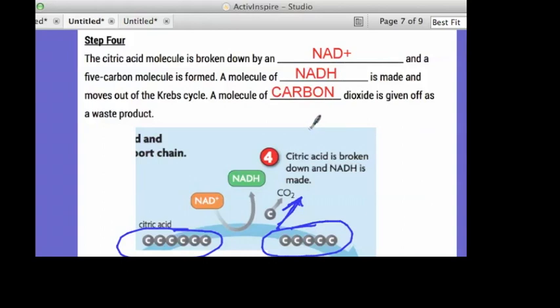We just give it off. The plants take it in and make it into oxygen and we breathe it out. They breathe it in. They breathe out oxygen. We breathe in oxygen. So a molecule of carbon dioxide is given off as a waste product.